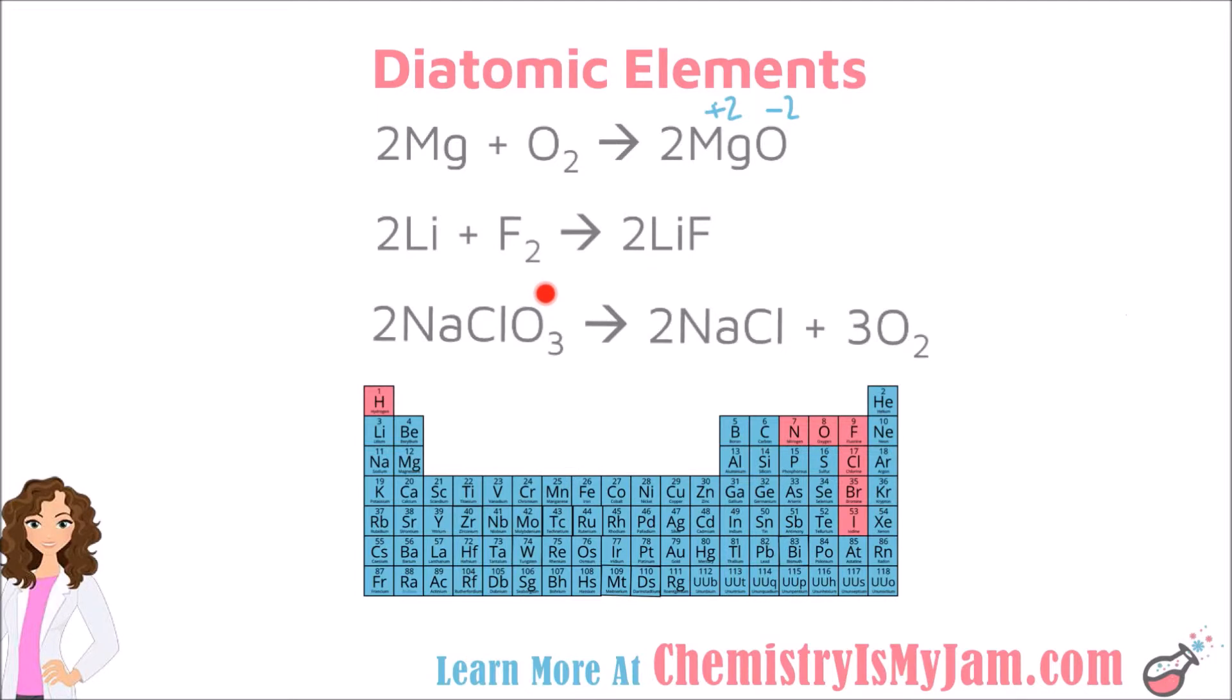Notice that there is a 2 on the fluorine on the left side of the reaction, but not on the right, because we never bring subscripts across the arrow. This 2 came from the fact that fluorine is a diatomic. The lack of a 2 over here comes from crossing down charges. The fact that there were a different number of fluorine atoms on each side of the reaction was fixed by balancing the reaction using coefficients.